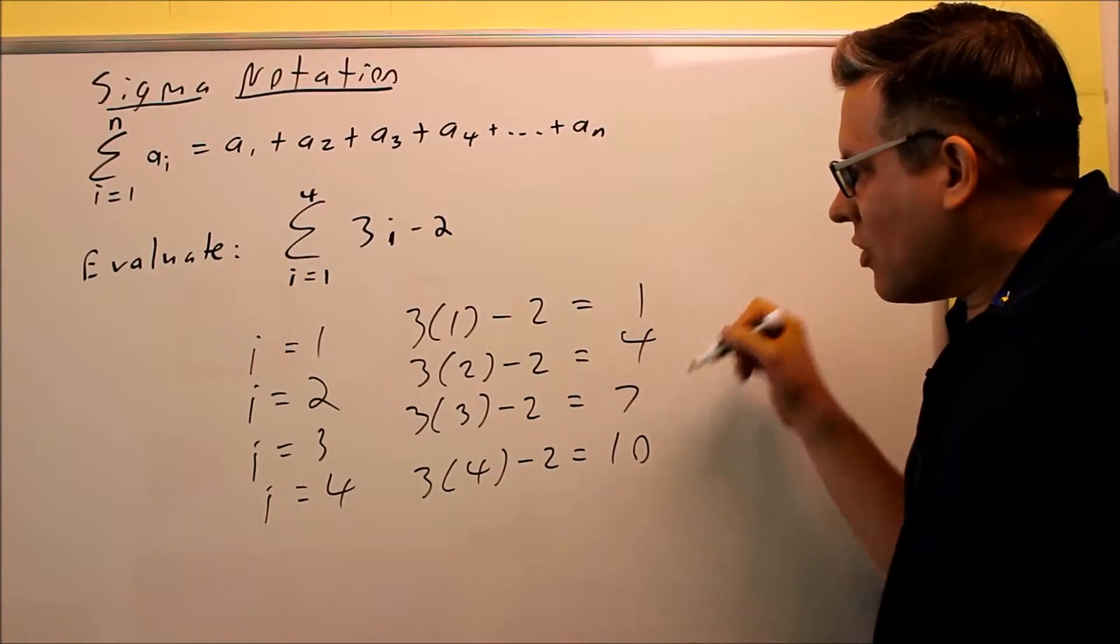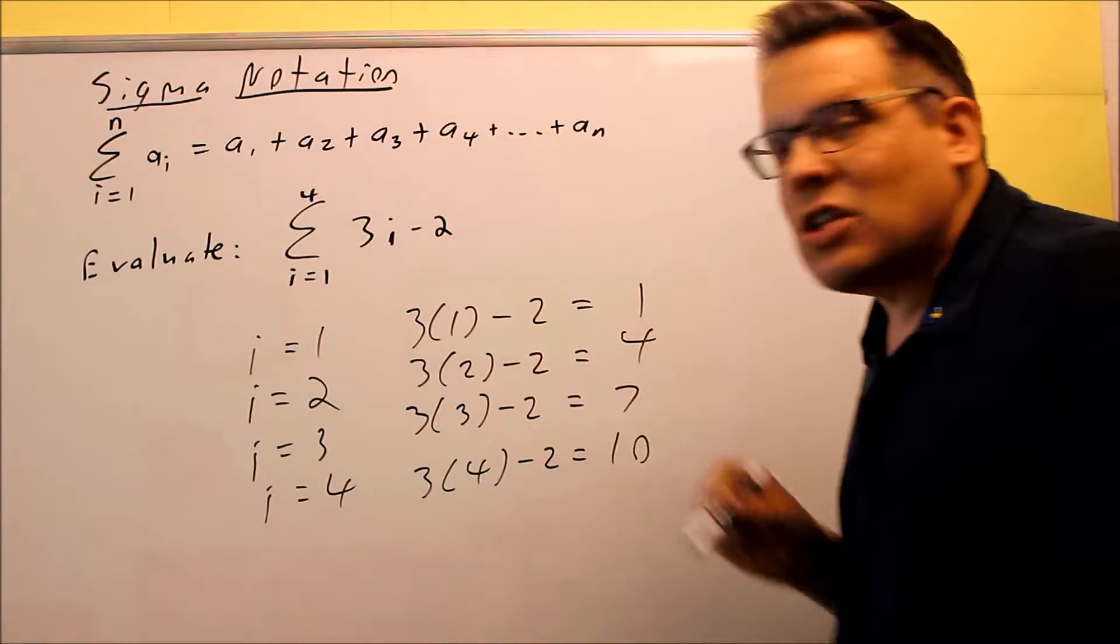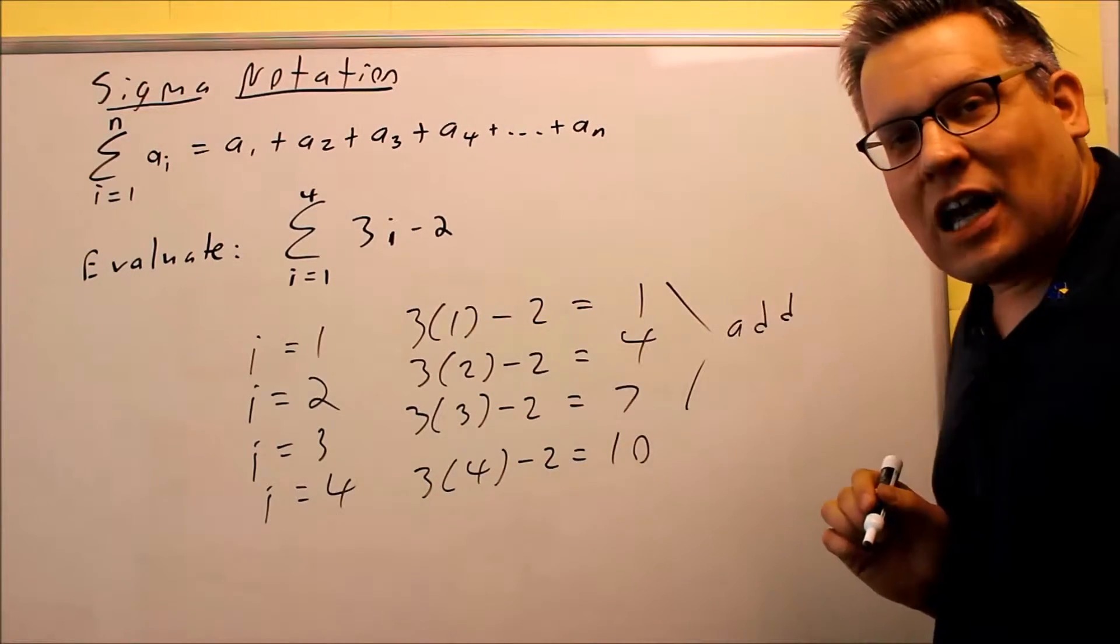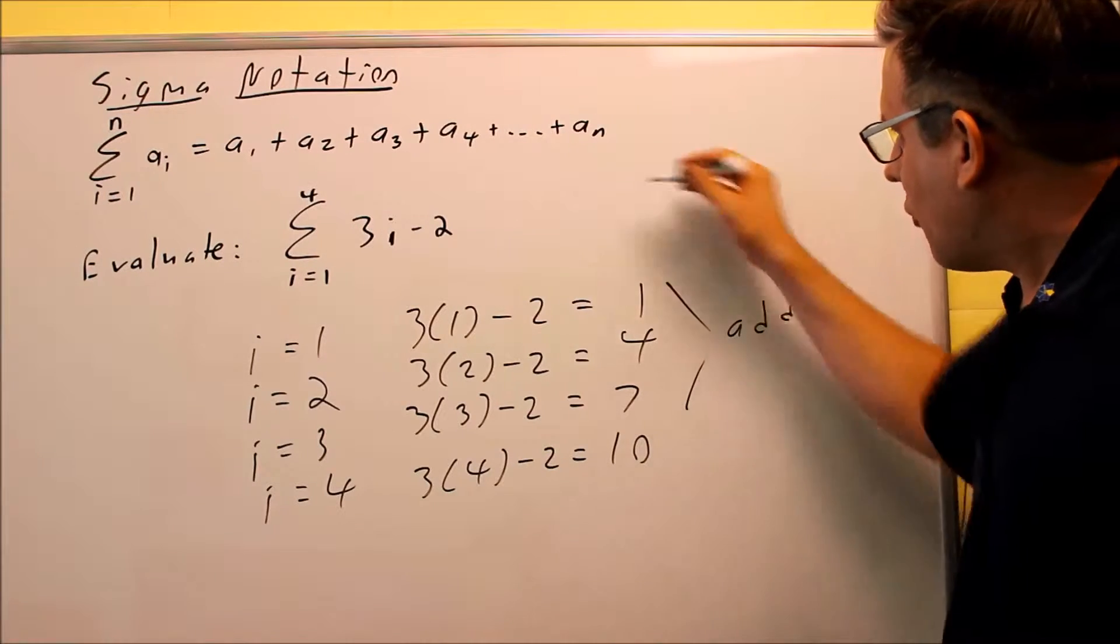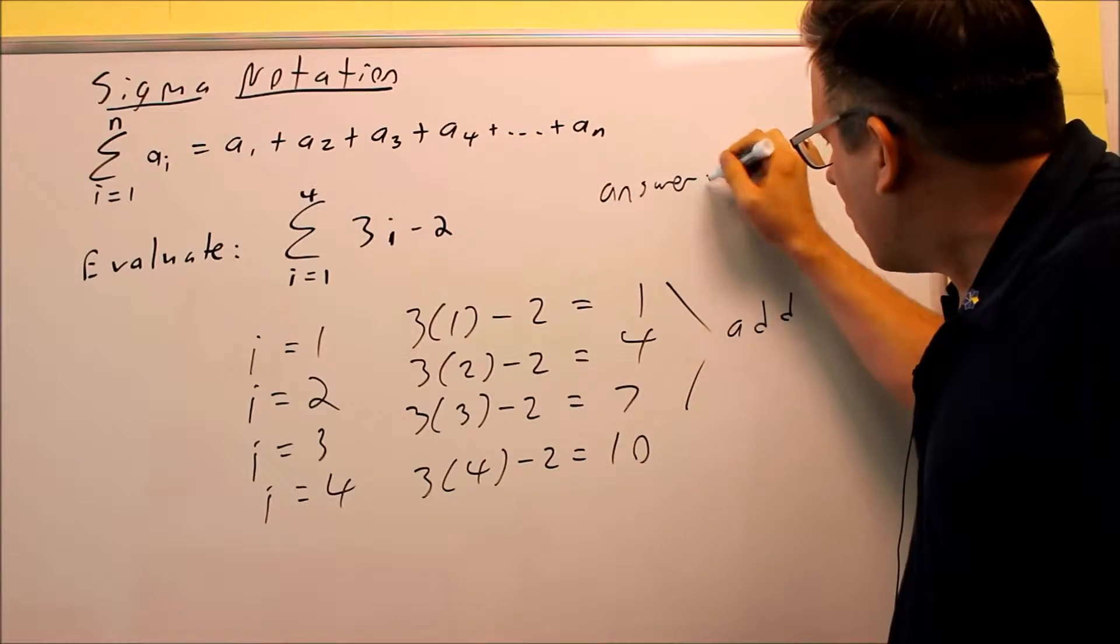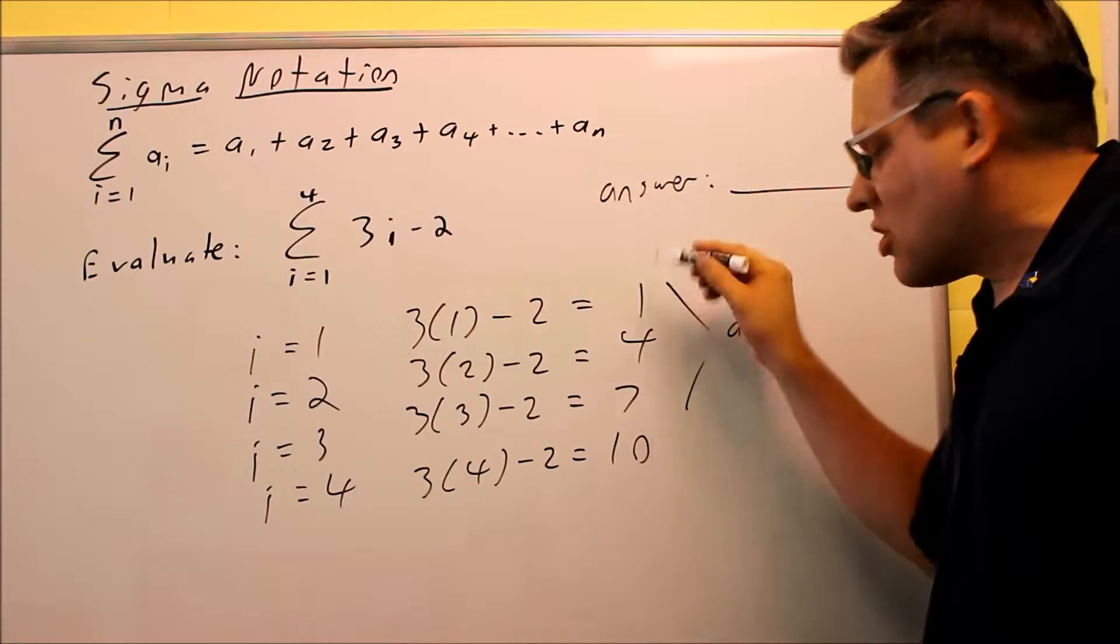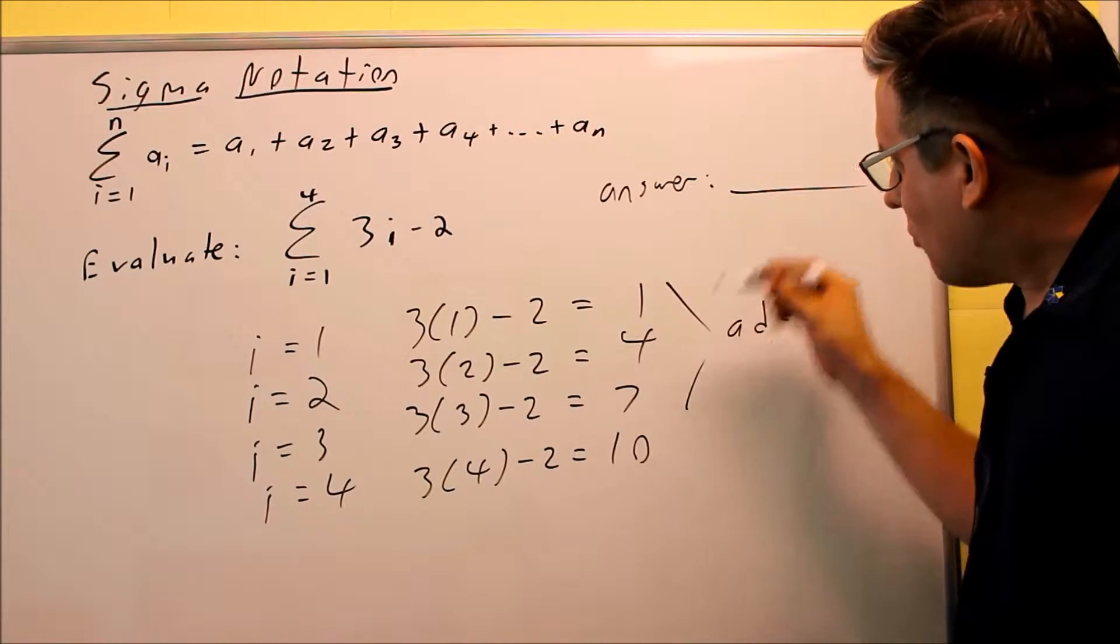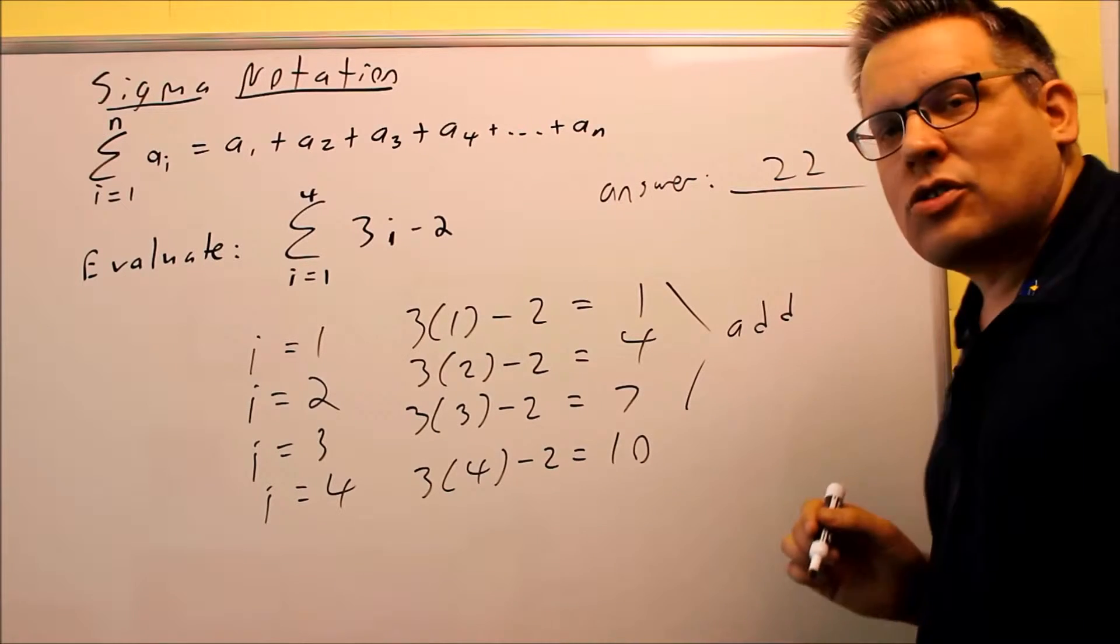So we get all these individual terms by changing the i. And then what you're going to do is you're going to add all that together. So the final answer that you're going to have here is going to be the sum of adding all this together here. So it's going to be 17, 18 plus 4 is 22. So 22 is your answer.